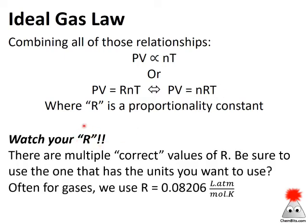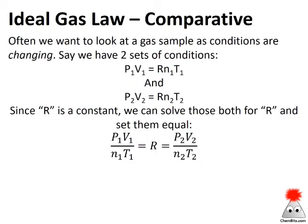Be careful with R — this is where a lot of people run into trouble. R has many different values that are conceptually the same but have different units. When you need R for a gas law, make sure you get a value of R that corresponds with the units you want to use. Most of the time for gases, we use R with units of liter atmospheres per mole Kelvin: 0.08206 L·atm/(mol·K). Liters is a volume unit, atmospheres is a pressure unit, moles is an amount unit, and Kelvin is a temperature unit.